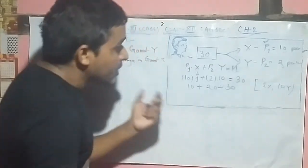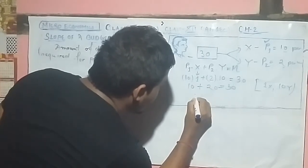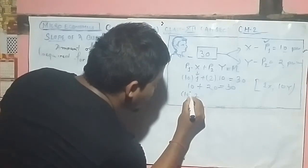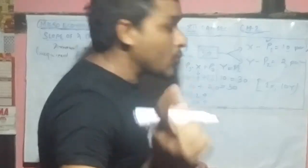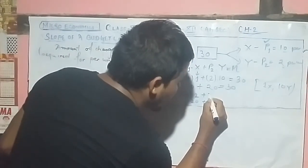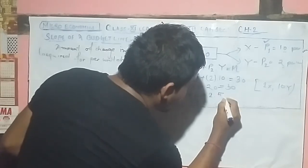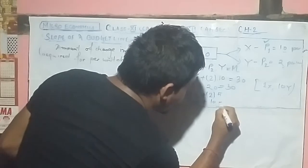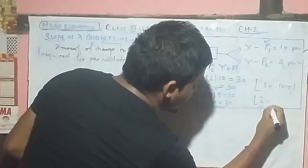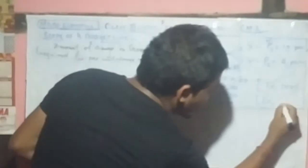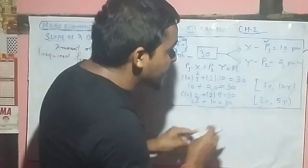Now if we want to purchase another unit of X, say X equal to 2, the price of X per unit is 10, so he spends 20 rupees on X. That leaves 10 rupees for Y. Since the price of Y is 2 per unit, he can purchase 5 units of Y. So 10 plus 20 equals 30 — the second combination is 2 units of X and 5 units of Y.